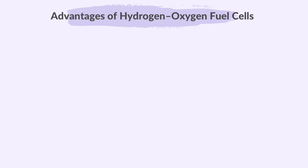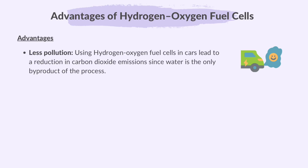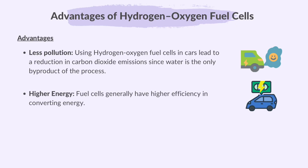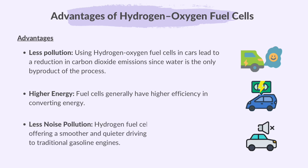Let's discuss the advantages and disadvantages of using hydrogen-oxygen fuel cells in comparison with gasoline or petrol engines in vehicles. The advantages are: Less pollution — using hydrogen-oxygen fuel cells in cars leads to a reduction in carbon dioxide emissions, since water is the only by-product of the process. Higher energy — fuel cells generally have higher efficiency in converting energy. Less noise pollution — hydrogen fuel cells operate quietly, offering a smoother and quieter driving experience compared to traditional gasoline engines.